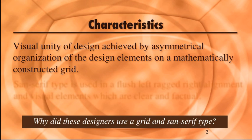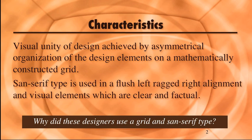Visual unity of design was achieved by asymmetrical organization of design elements on a mathematically constructed grid. Sans-serif type is used in a flush left, ragged right alignment, and visual elements were clear and factual. As the artist, you were an important means of spreading information, and presenting ideas with clarity and order was of paramount importance.